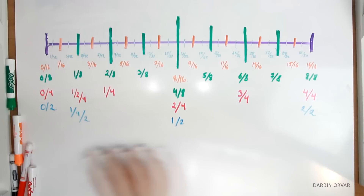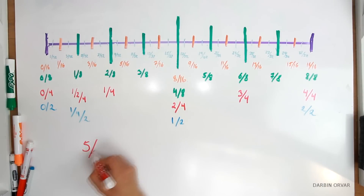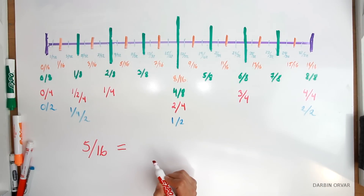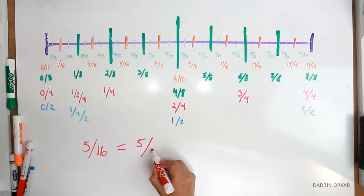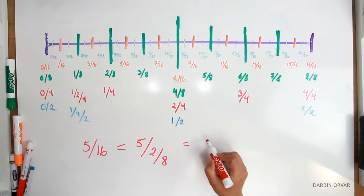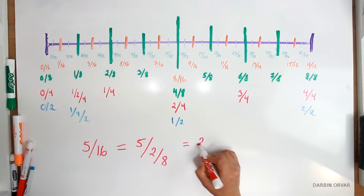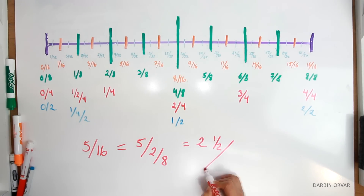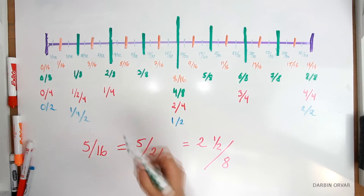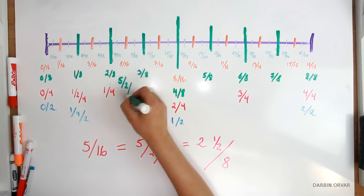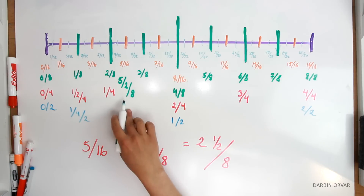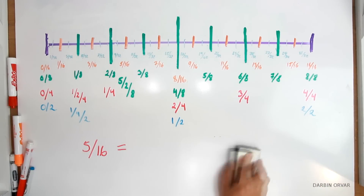Let's take another example. You have 5 sixteenths, and you want to place that on the 8th scale. We would write 5 halves over 8. Or you could translate it as 2 and 1 half over 8. So let's write down 5 sixteenths on the 8th scale on the board.